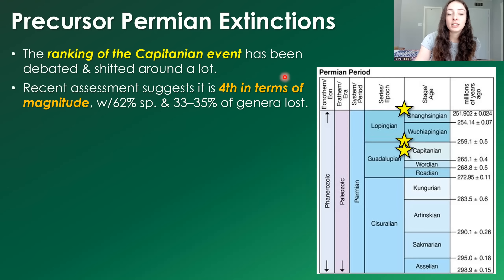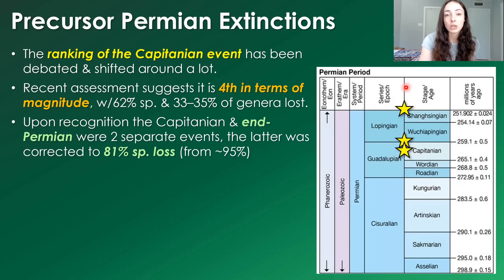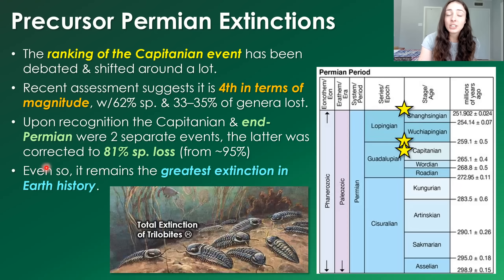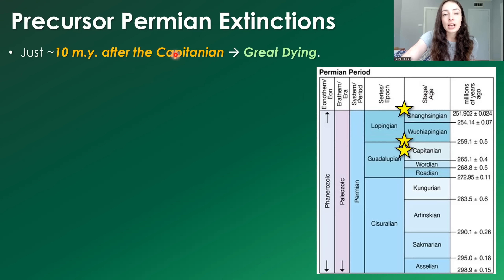Recent assessments suggest the Capitanian event is fourth in terms of magnitude, with 62% species loss and 33–35% genera loss. Upon recognizing it as separate from the end Permian, the end Permian's species loss was corrected to about 81% rather than the previously estimated 95%. Even so, even after being reduced to 81%, it is still by far the greatest extinction event in Earth's history — occurring just 9 to 10 million years after the Capitanian event.